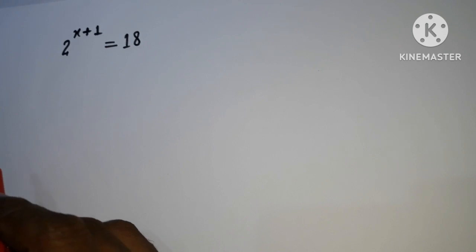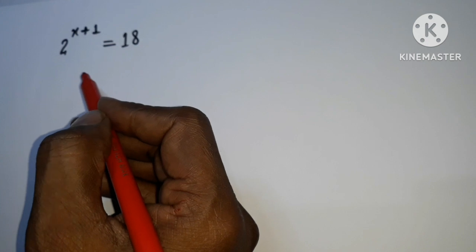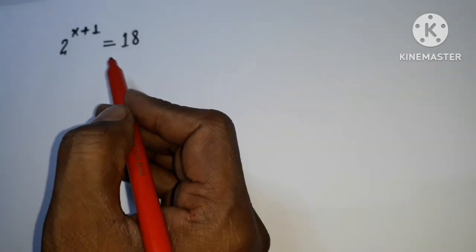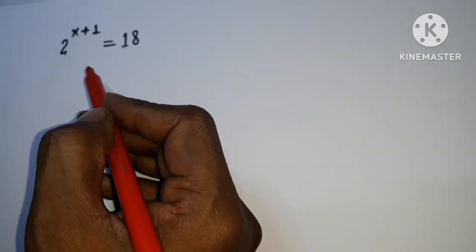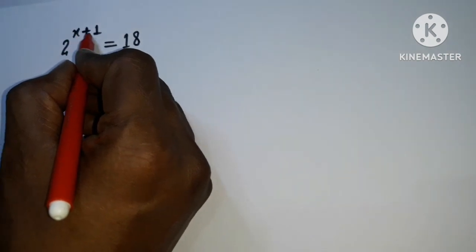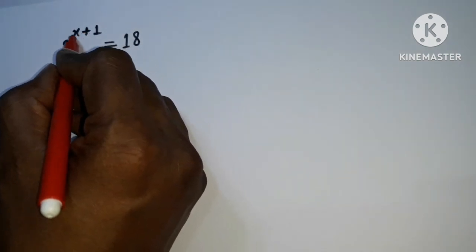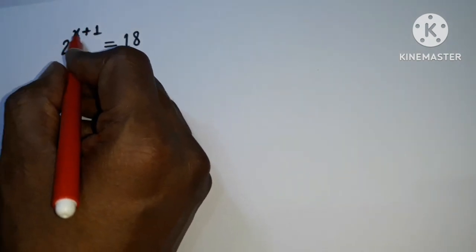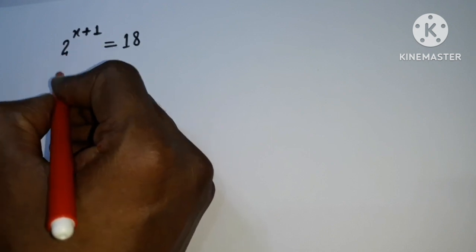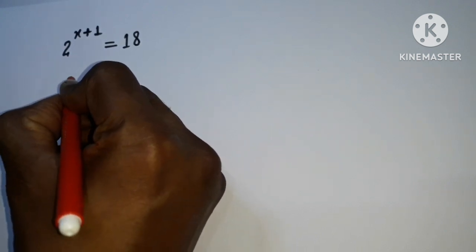The question arises: how we can solve this question? As you know, we need to put all the constants on the right side and all the variables on the left side. So here we are seeing that there is a power x plus 1. So we need to separate these terms.